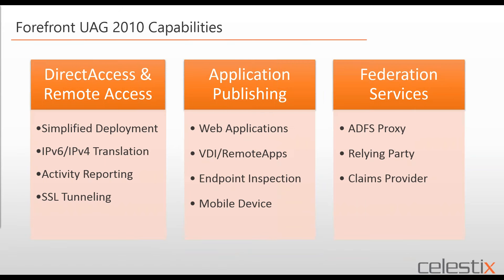Forefront UAG capabilities fall into three discrete buckets. First is direct access and remote access. Direct access is part of Windows Server — built into Windows Server 2008 — but it was not deployment friendly. It did not have IPv6 to IPv4 translation and only worked if you were straight IPv6 inside your data center. UAG brought activity reporting, so you could see who's connecting and authenticating, as well as SSL tunneling or network connector for VPN, which worked well for Windows XP and Windows machines.